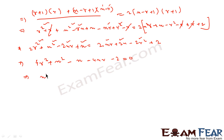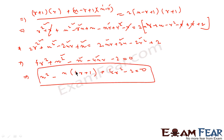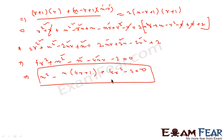Rearranging, we get n squared minus n times (4r plus 1) plus 4r squared minus 2 equals 0. And this is exactly what we were asked to prove: n squared minus n(4r plus 1) plus 4r squared minus 2 equals 0. Hence proved.